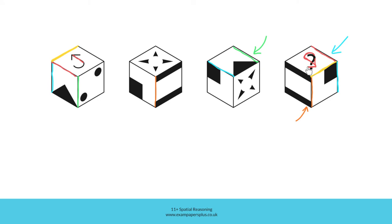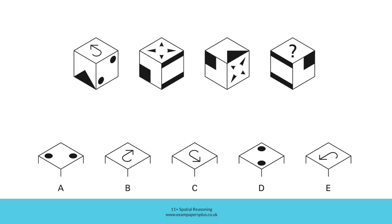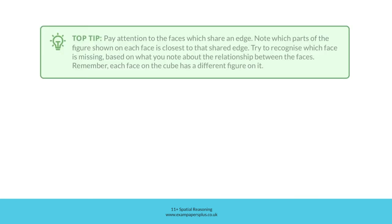Now all we need to do is look for this figure amongst the answer options and check to make sure it's in this orientation. As you can see, although the correct figure is represented three times in the answer options, it's only correctly orientated in option C, meaning that C is the correct answer to this question.